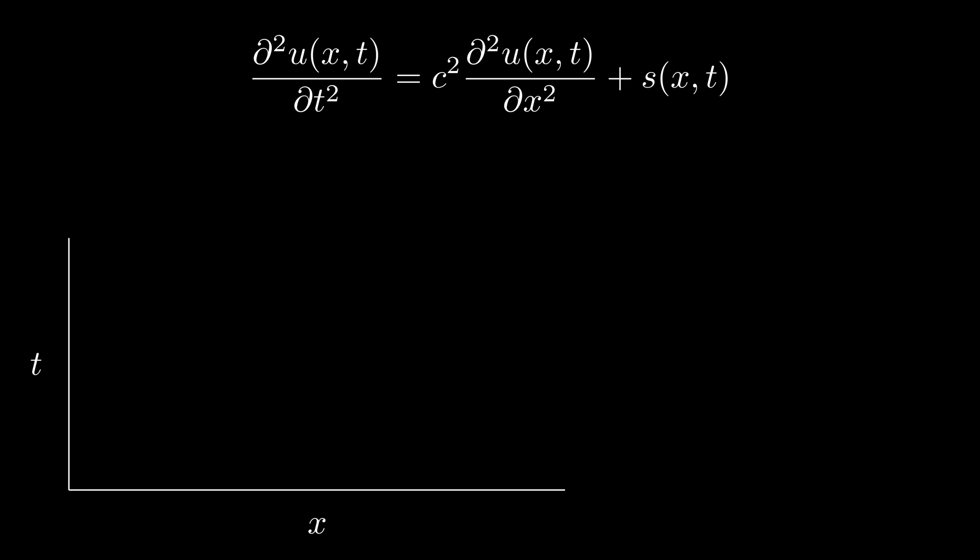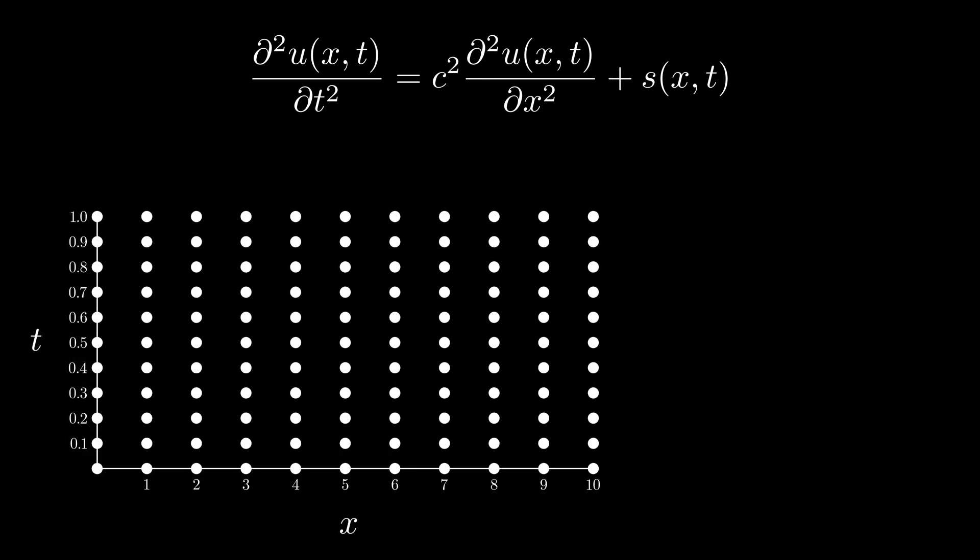I want to solve this in the XT domain. Right now this is continuous with infinitely many points, and solving PDE analytically in this domain would be quite challenging. This is where I can use numerical methods and discretize the domain into finite points. To keep things simple, let's limit the domain to 10 meters and 1 second with a total of 121 points.